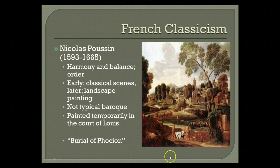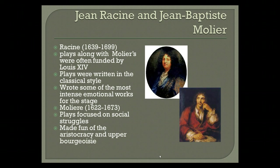Next are Jean Racine and Jean-Baptiste Molière, both dramatists and playwrights. Racine's plays, along with Molière's, were often funded by Louis XIV to be performed at Versailles in front of the nobles of the court. His plays were written in the classical style, and he wrote some of the most intense emotional works for the stage. Molière, on the other hand, focused his plays on social struggles — making fun of the aristocracy, the upper bourgeoisie, and high church officials in his plays.